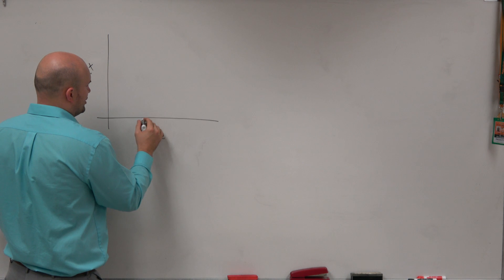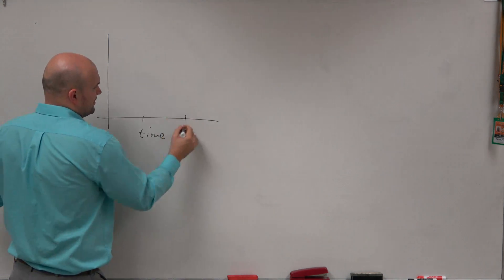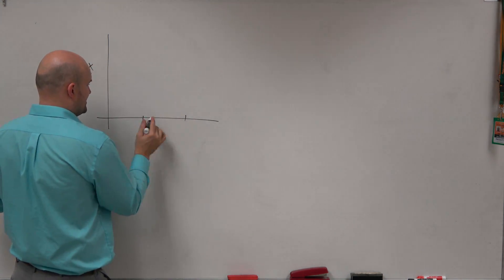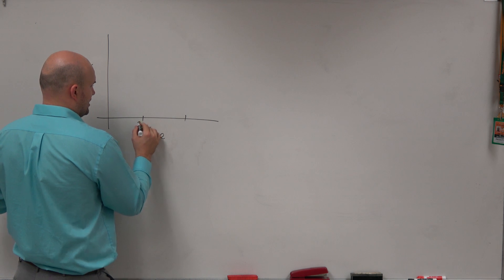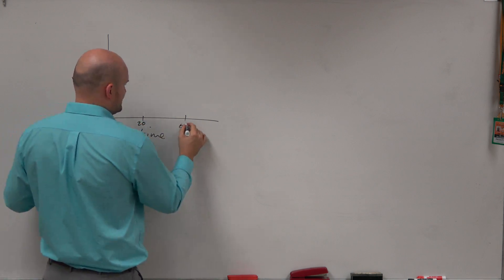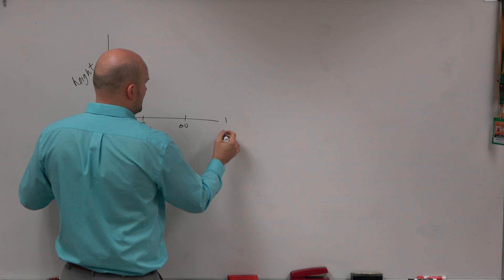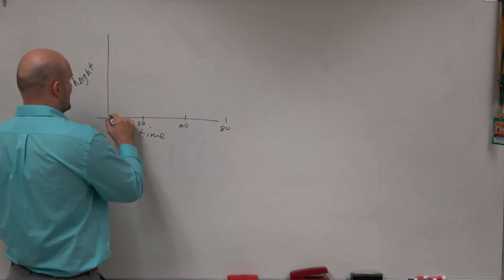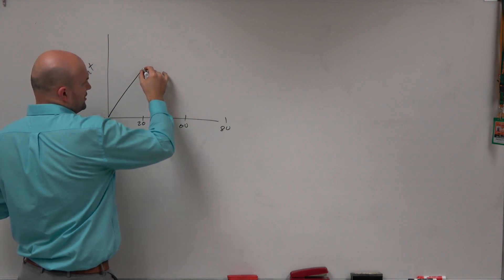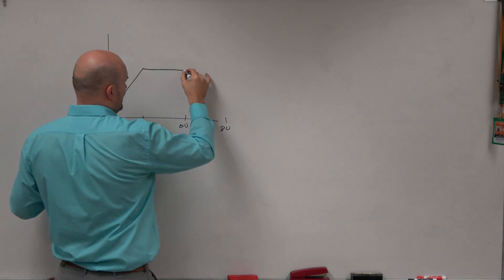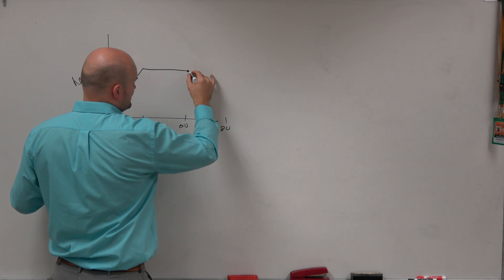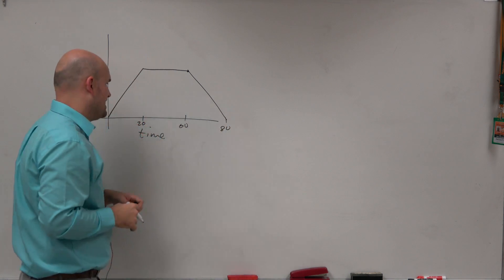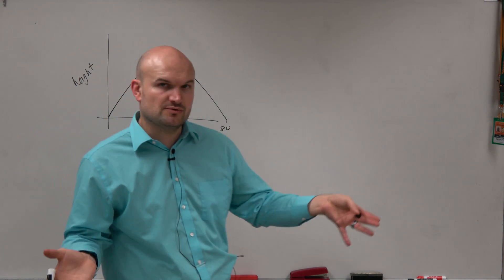If we say here's time and here's height, it's a relationship of you being on a roller coaster. This is not an exact picture by any means, but just for the purposes of this math instruction, let's call this 20 and this 60, and then one at 80. So you could have something in the graph that looks like this. As time goes on, you're going to be going up.